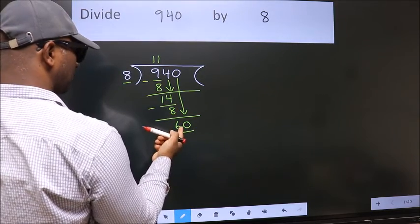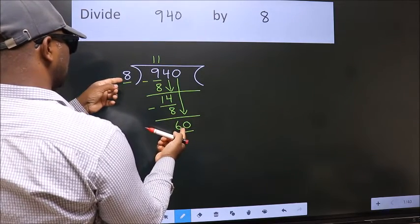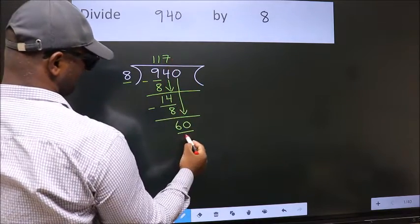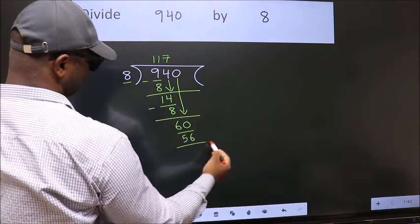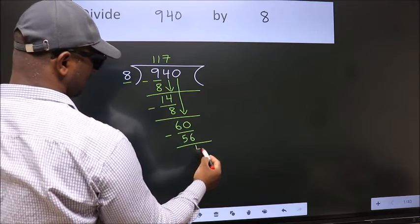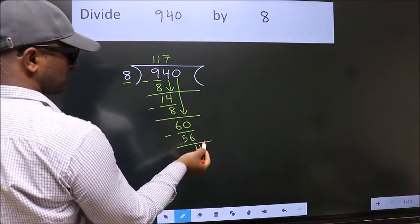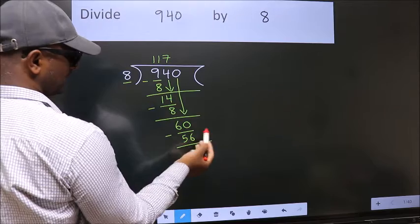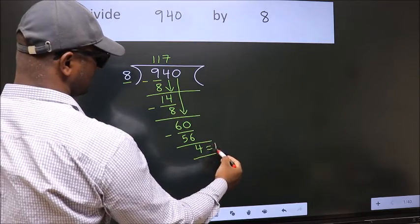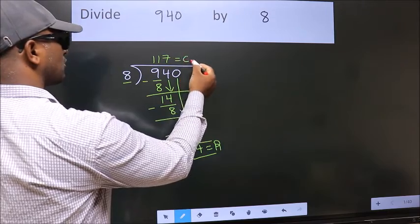A number close to 60 in the 8 table is 8 sevens 56. Now we subtract — we get 4. No more numbers to bring down, so we stop here. This is our remainder, and this is our quotient.